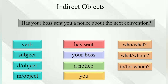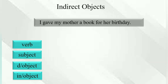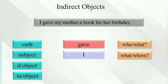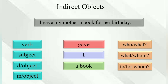'I gave my mother a book for her birthday.' Gave — who gave? I. I gave what? A book. A book to whom? My mother. So 'my mother' is the indirect object.